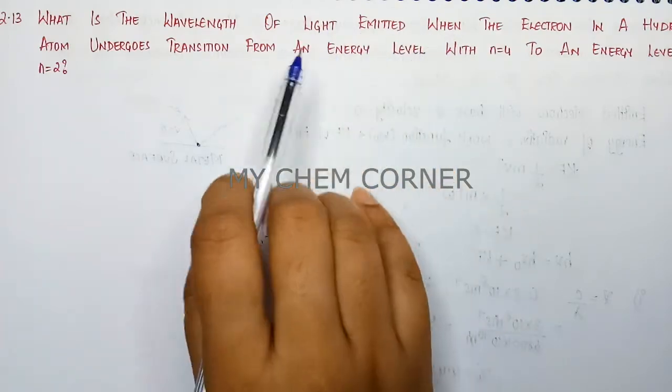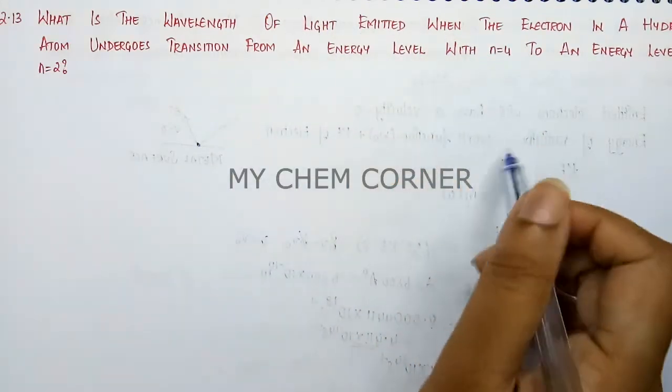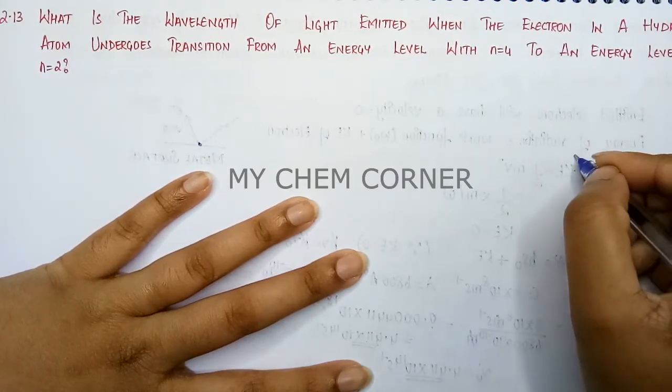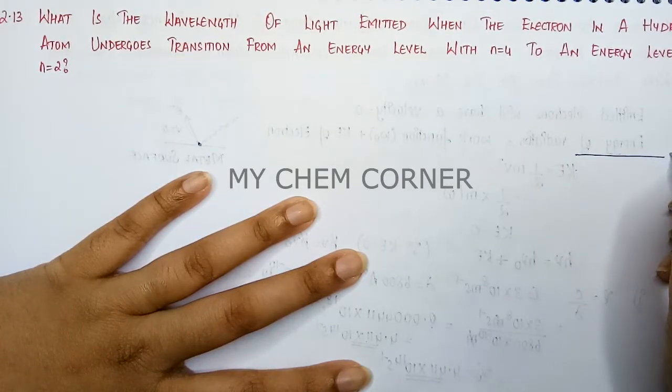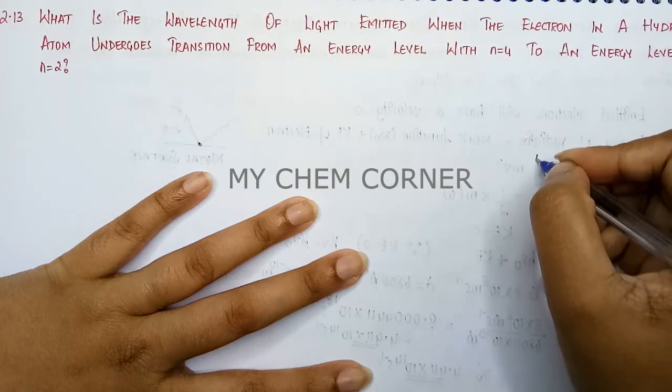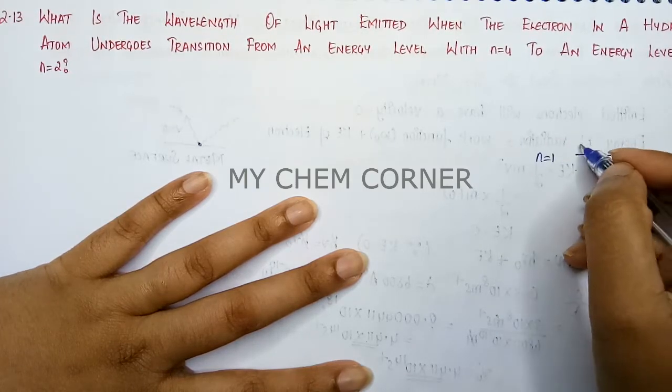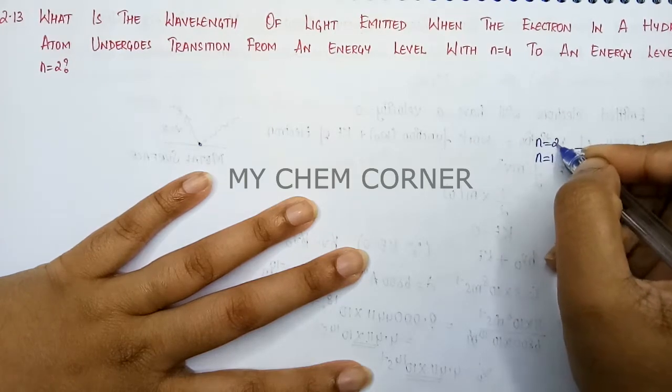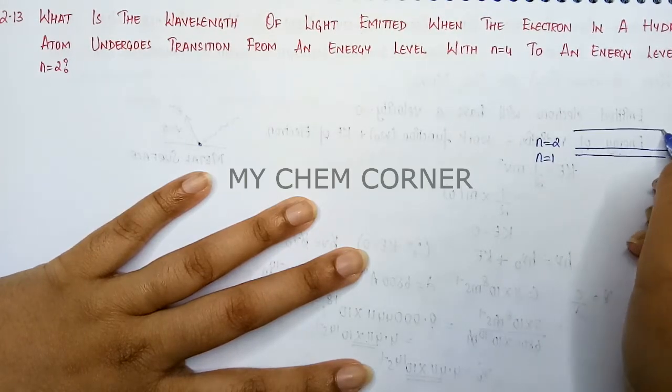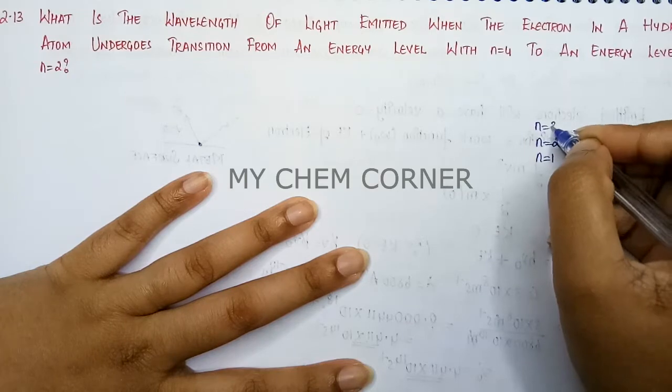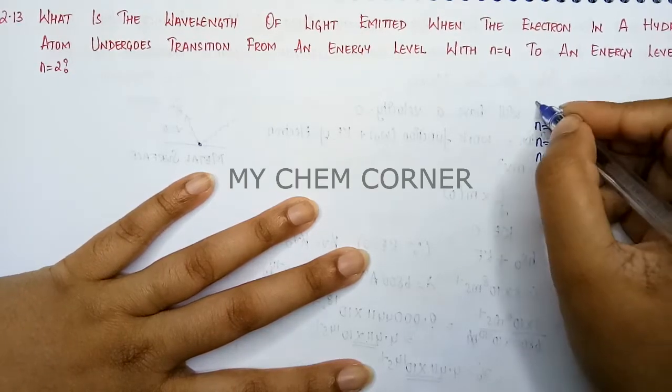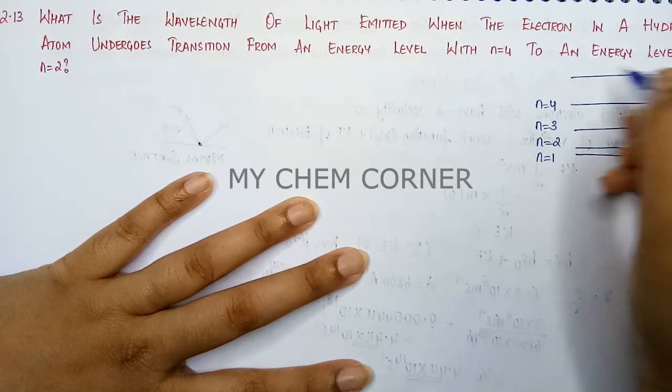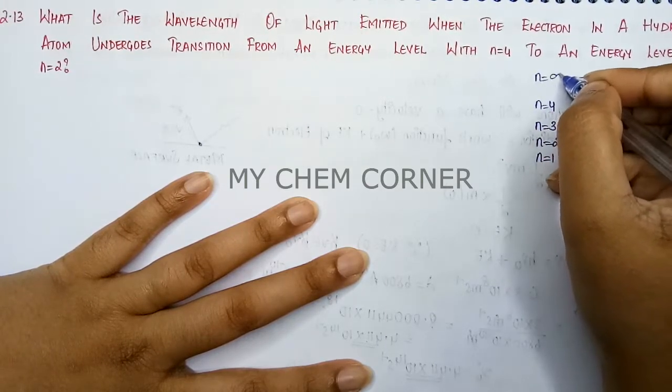When we talk about emission, I am talking about different energy levels. Say I have this as energy level 1, then I have this as energy level 2, then I have energy level 3, and then I have energy level 4, and so on. It goes probably up to infinity.